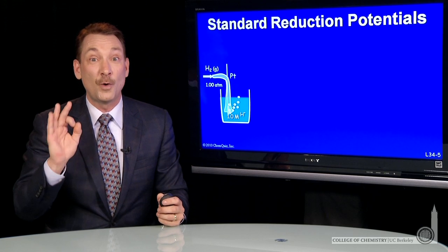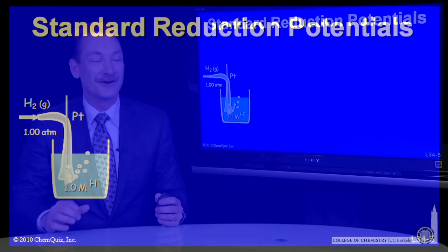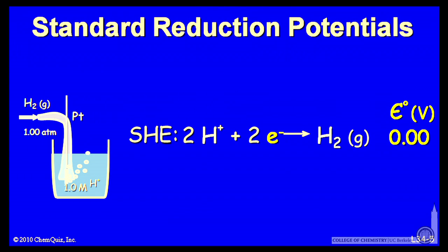In order to do that, we choose one half cell to be the standard, and that standard is the standard hydrogen electrode. At the standard hydrogen electrode, electrons are transferred to hydrogen ions to form hydrogen gas, or hydrogen gas gives up electrons to form hydrogen ions.